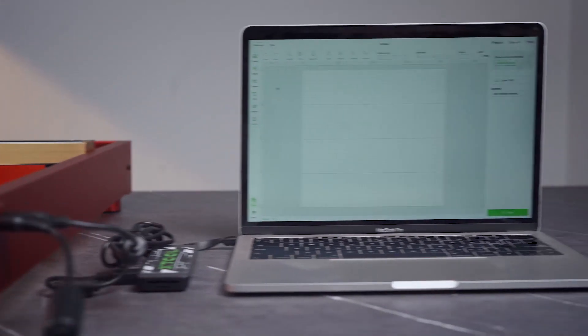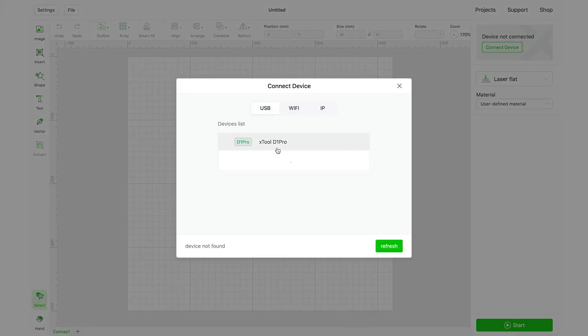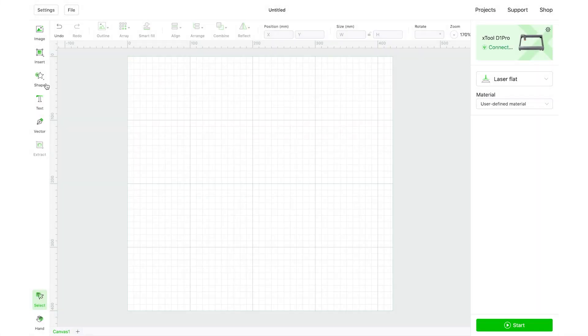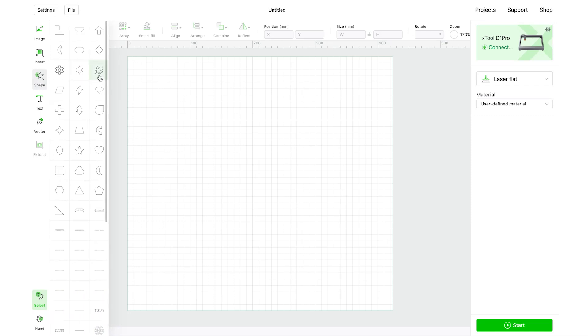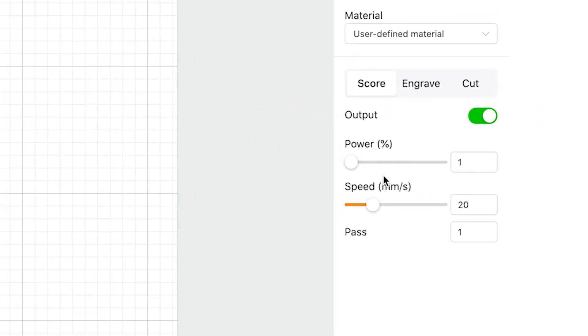Open XTool Creative Space. Connect your device to XCS. Insert a shape or other elements. Set the processing parameters and then click Start.